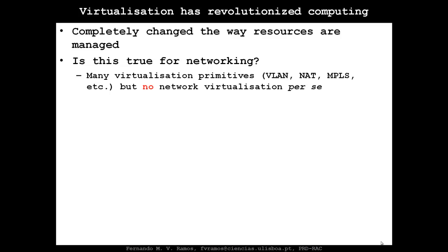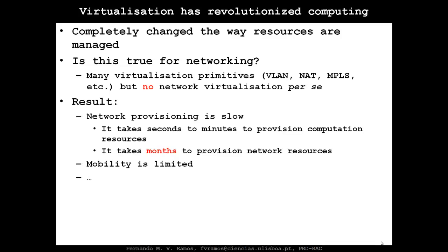VLANs and NATs are primitives — they allow a bit of virtualization, but it's not complete network virtualization. And this has been quite a problem. Network provisioning is very slow. If you compare provisioning computing resources with networking resources, for example provisioning virtual machines takes seconds to minutes, whereas it takes literally months to provision networking resources. Other problems include very limited mobility, because IP addresses are fixed to the topology, so it would be nice to virtualize IP addresses.